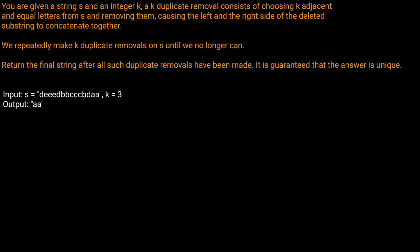Hello and welcome back to the Cracking Thing YouTube channel. Today we're going to be solving LeetCode problem 1209: Remove All Adjacent Duplicates in a String 2. You're given a string s and an integer k. A k-duplicate removal consists of choosing k adjacent and equal letters from s and removing them, causing the left and right side of the deleted substring to concatenate together. We repeatedly make k-duplicate removals on s until we no longer can, then return the final string.